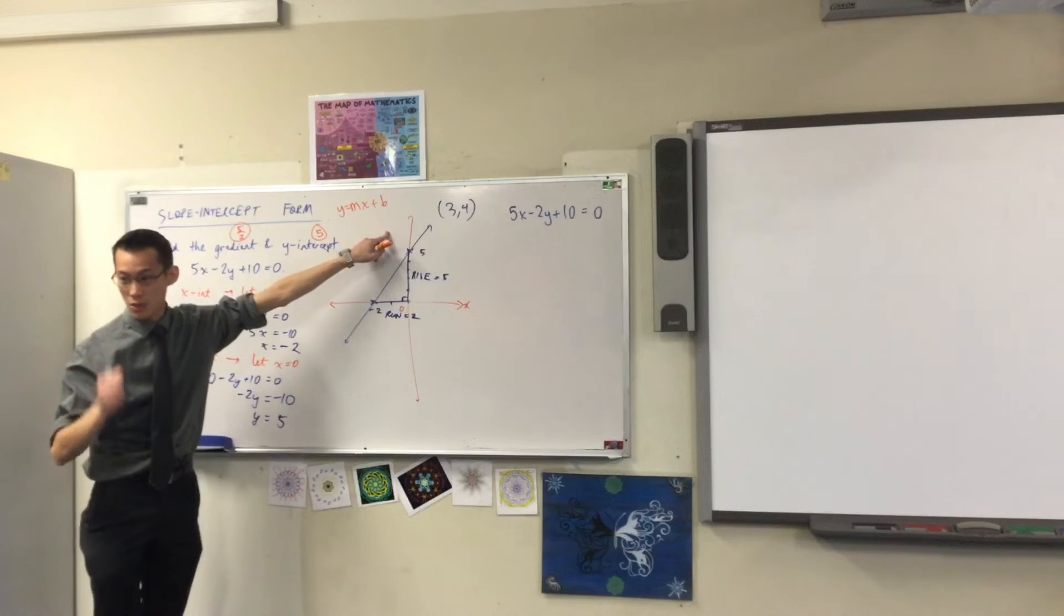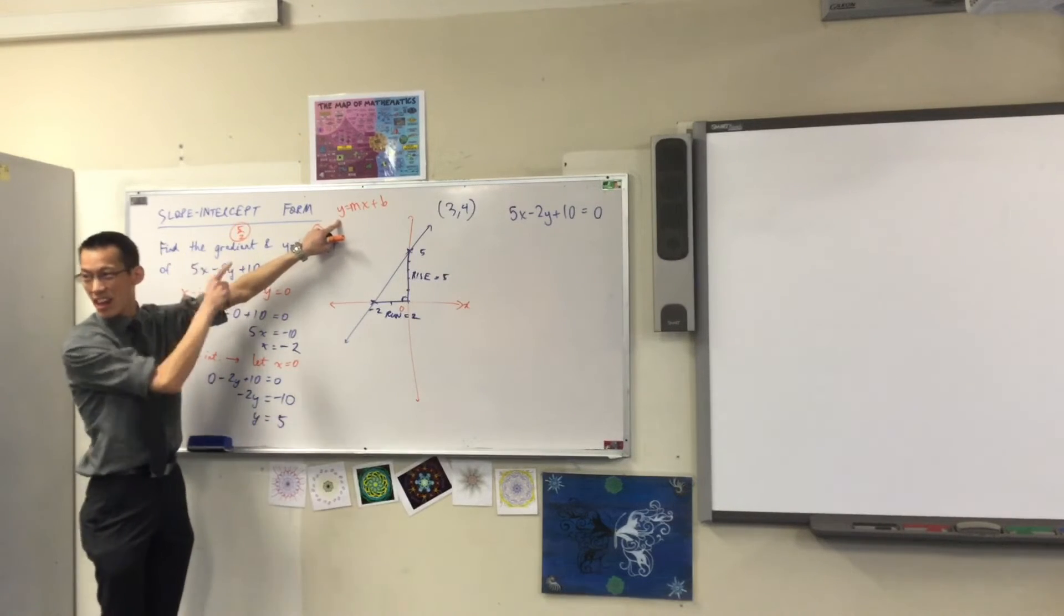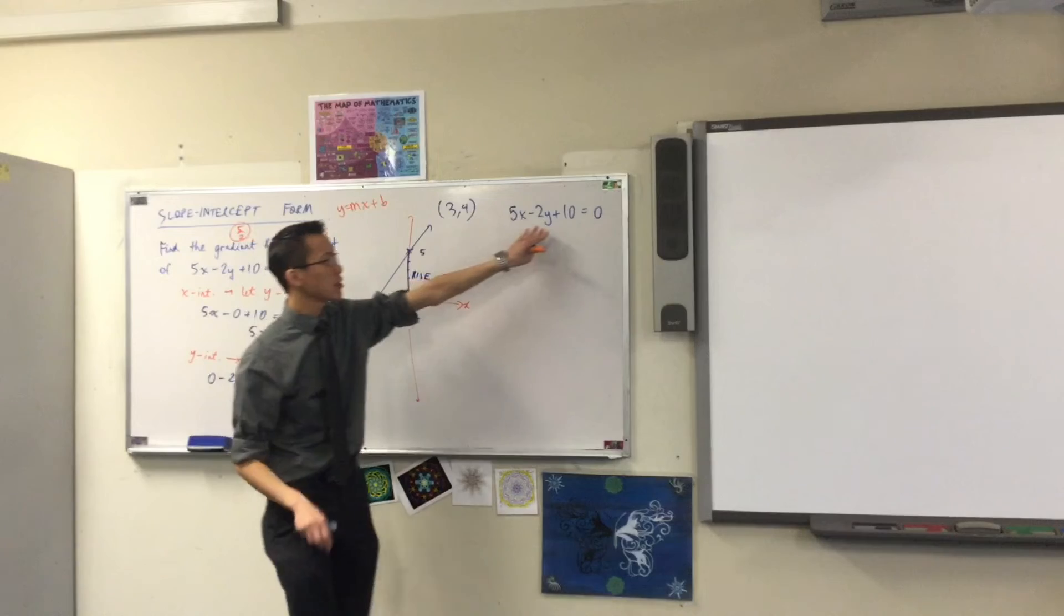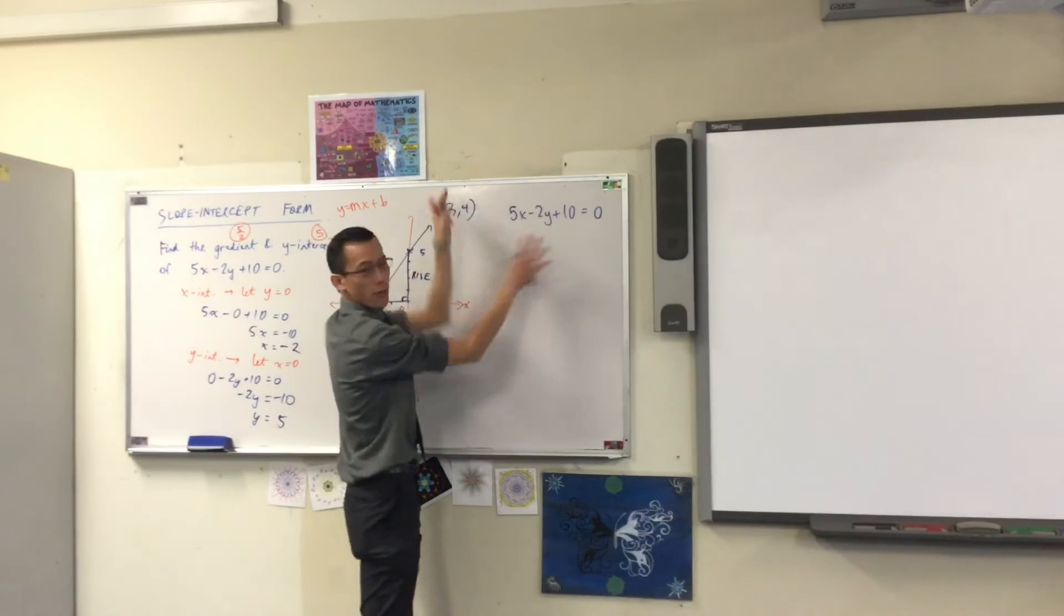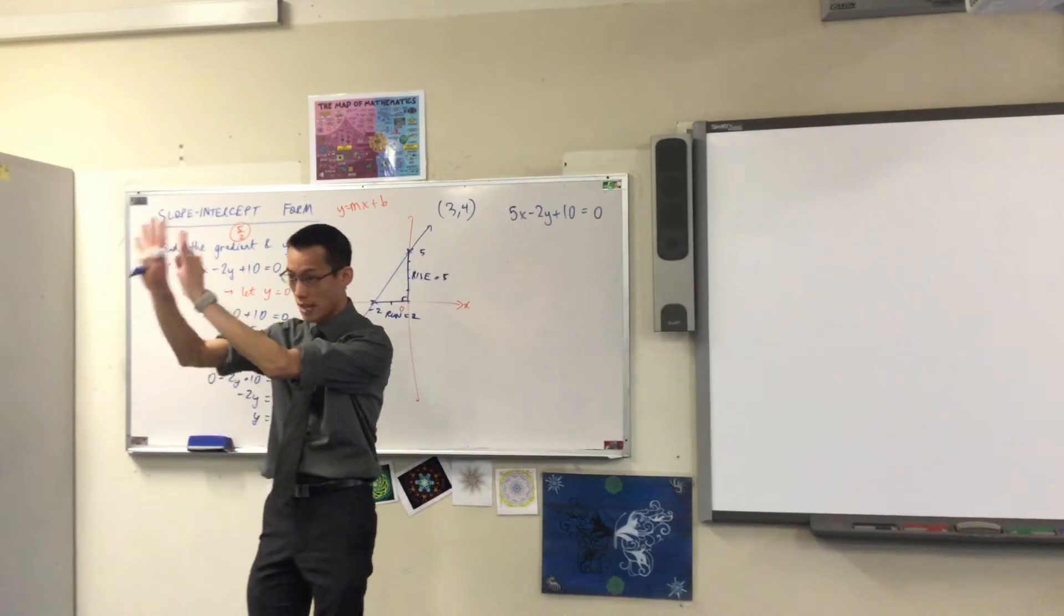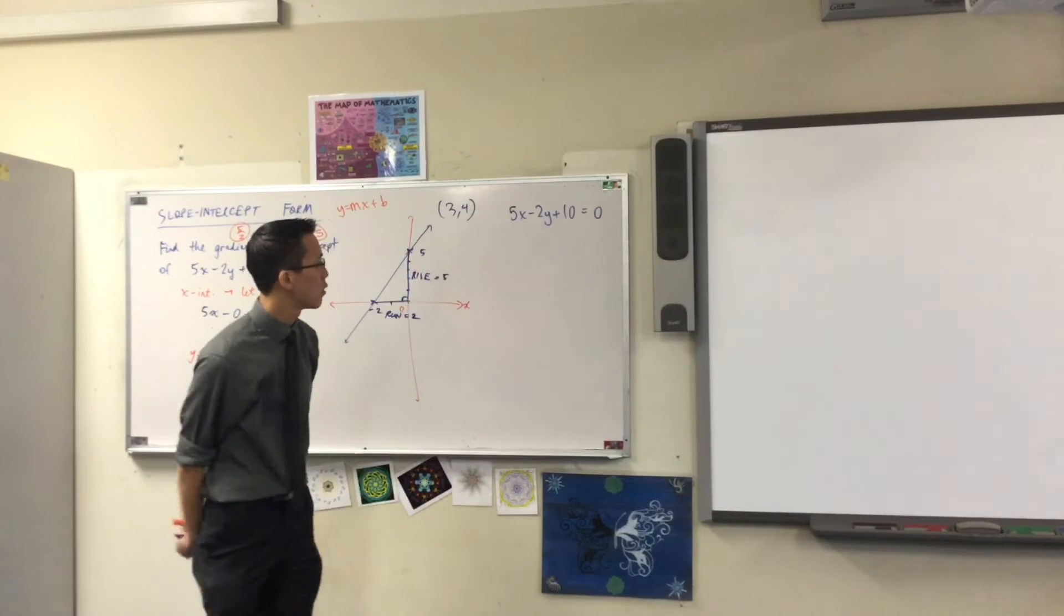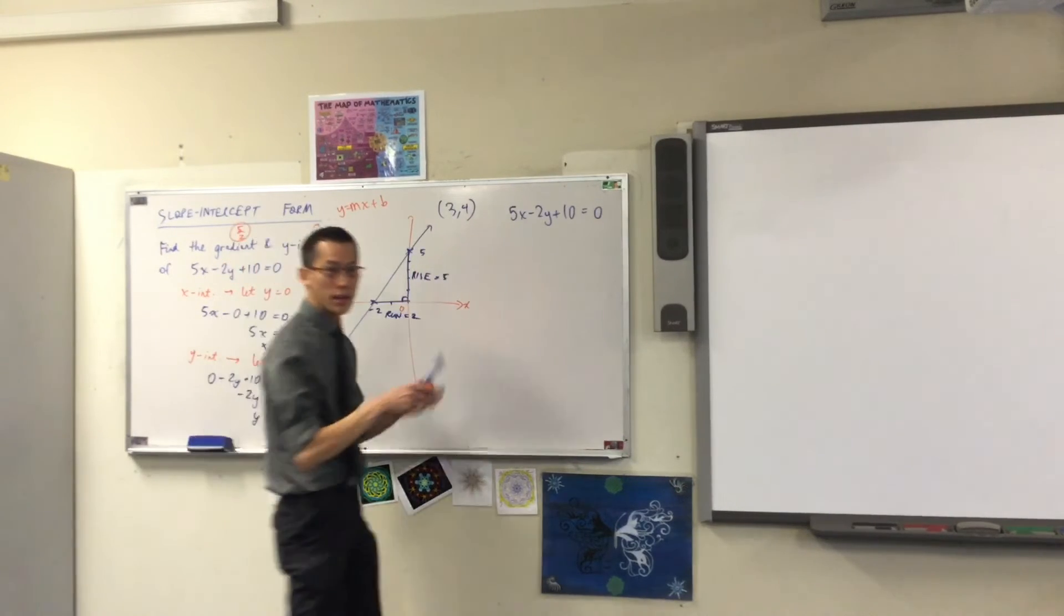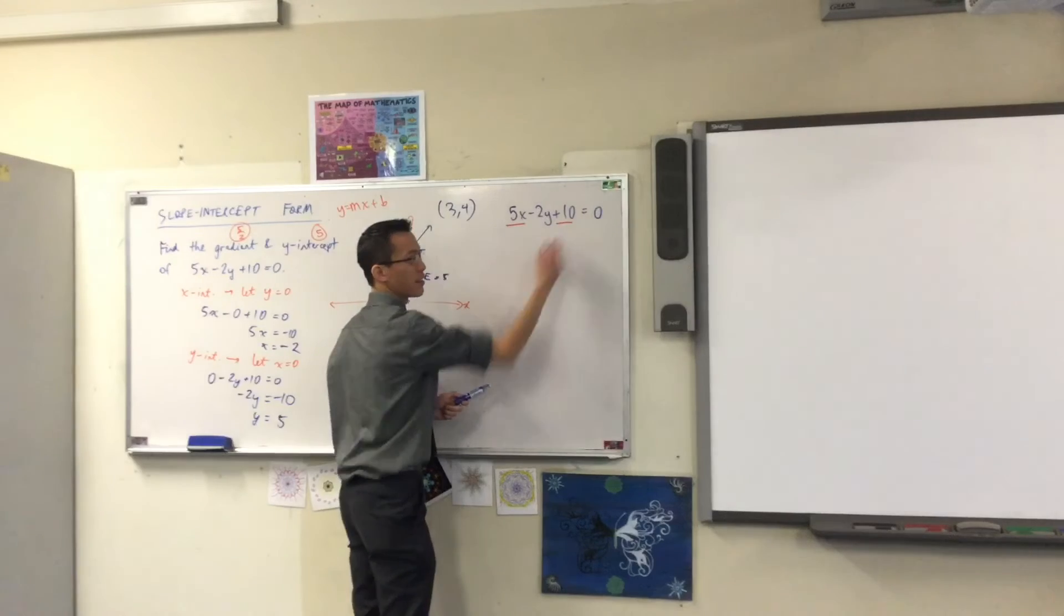Y equals mx plus b. The subject of the equation is y. That's the thing I want to get by itself. So, when you look at this, I've got all this stuff over here on the left. I need to get some stuff from the left over to the right. Which stuff do I need to get rid of?